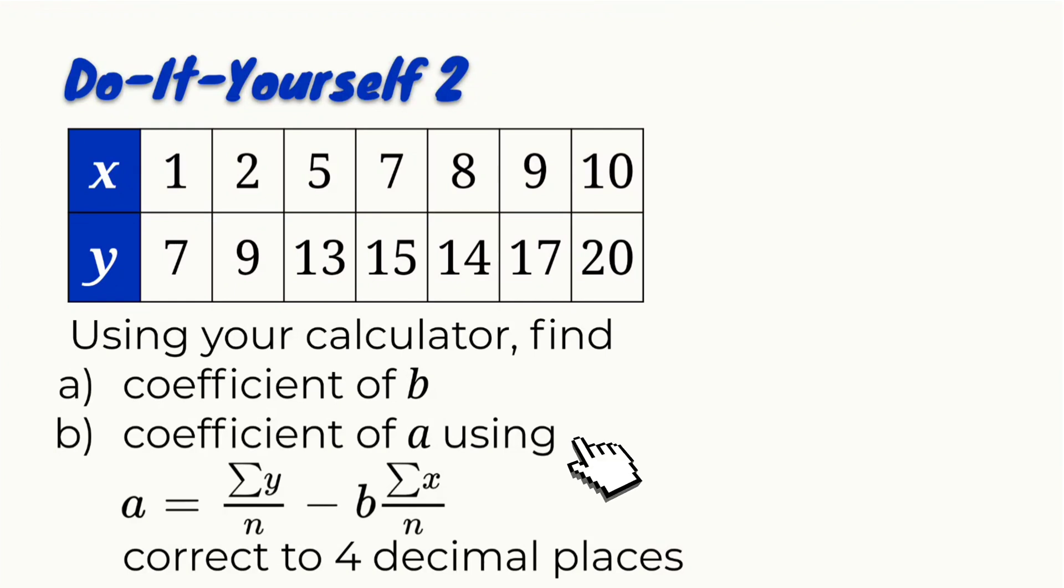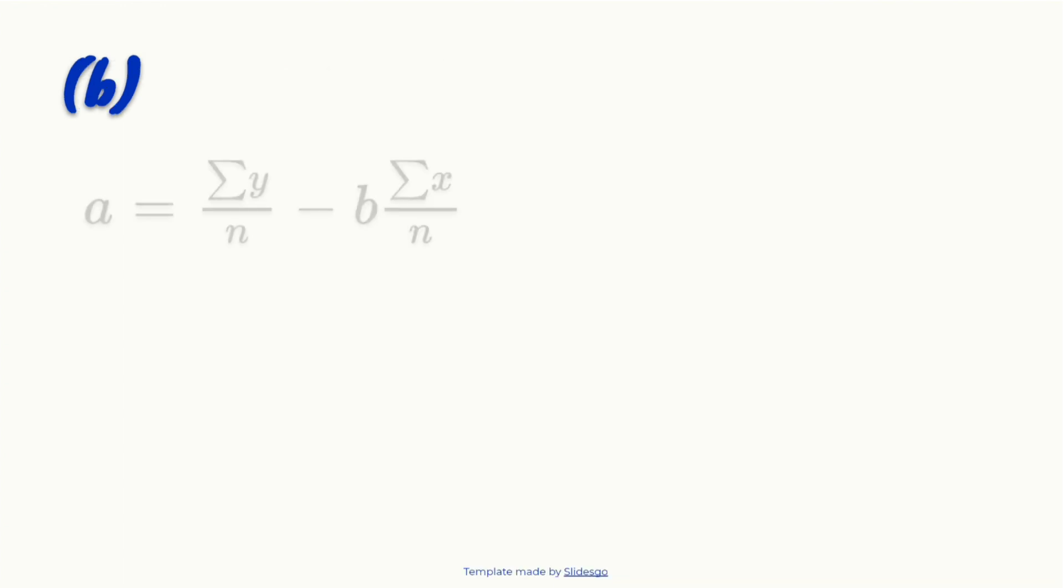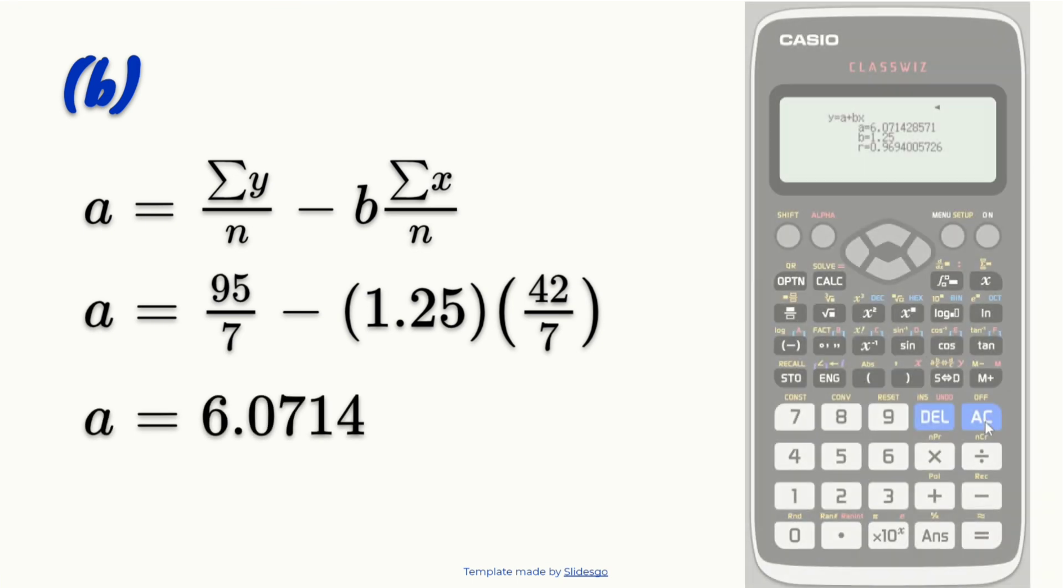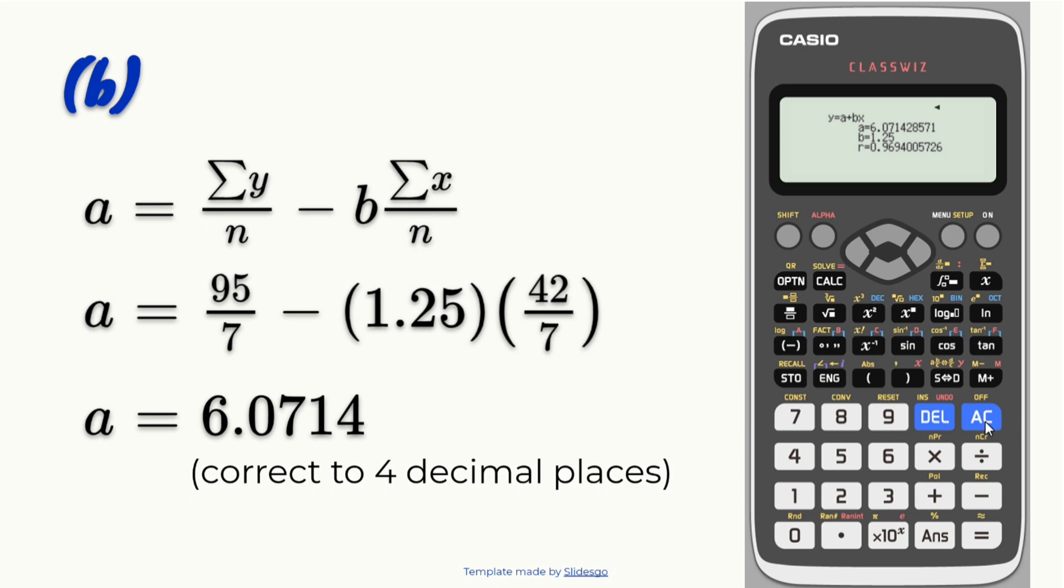Now let's find coefficient A using the formula correct to 4 decimal places. We're going to use the rounded value of B to substitute into the formula. And our A is 6.0714 correct to 4 decimal places.